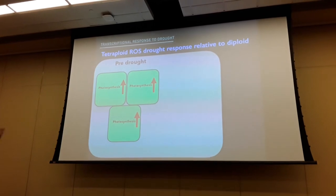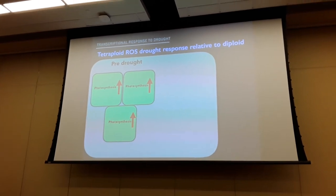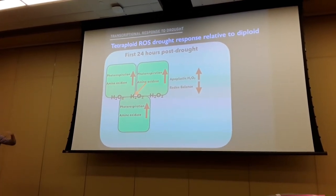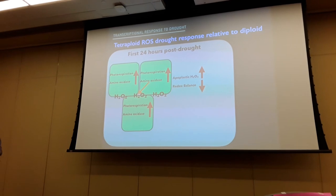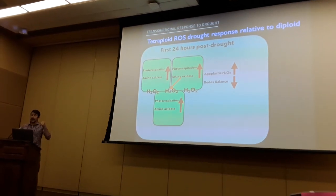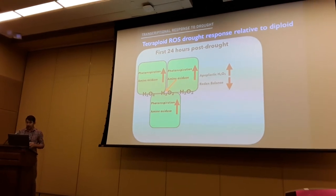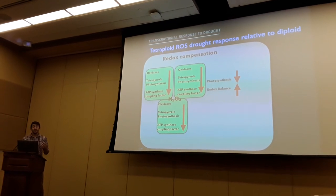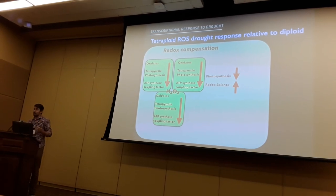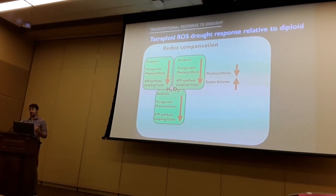To paint a picture: tetraploid cells are a little larger and less dense than diploid cells, prior to drought are more photosynthetically active, perhaps with a higher redox homeostasis. When you throw drought at them, one response is producing more amine oxidase than seen in the diploid, dumping hydrogen peroxide into the apoplast. Apoplastic hydrogen peroxide rises, driving redox balance out of balance. What we see as a possible corrective response is tetraploids producing oxidases and reductases while bringing down tetrapyrrole and ATP synthase coupling factors — really bringing down photosynthesis as a way of getting that redox balance back.